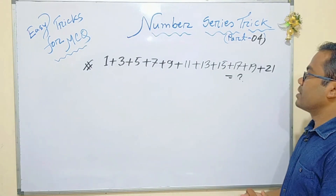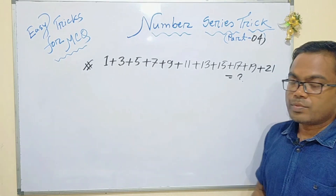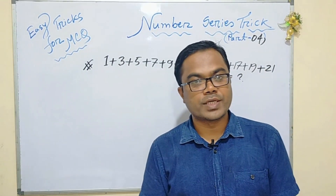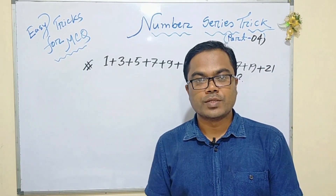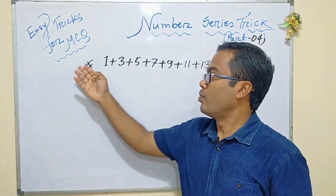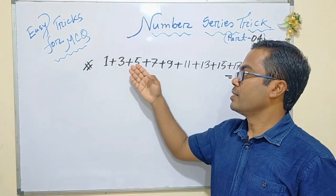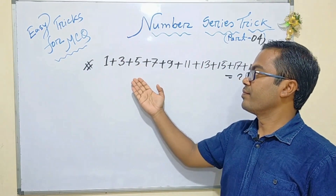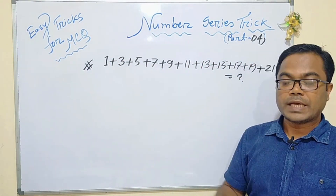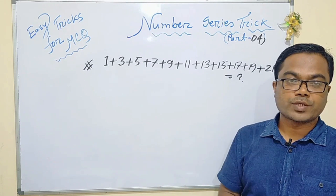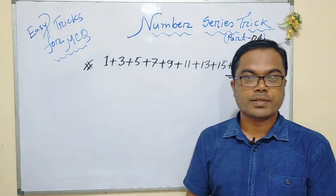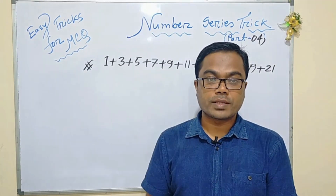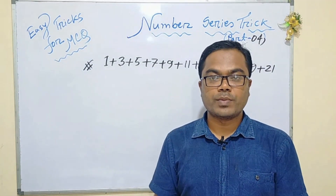What do you want to find out? It will be easy to work out. So, 1 plus 3 is 4, 4 plus 5 is 9. It will be difficult to find out if you try to do it by hand.